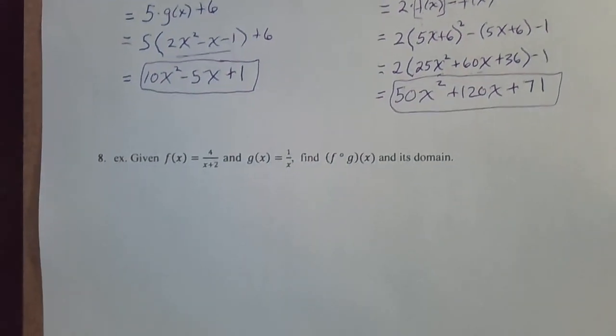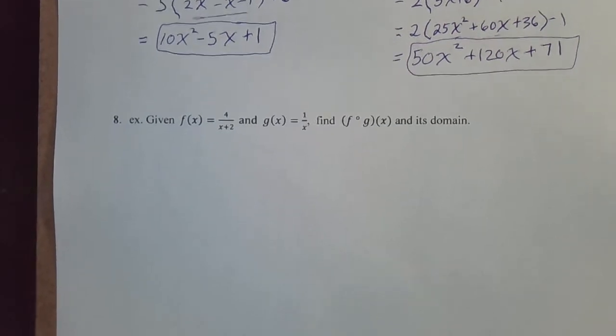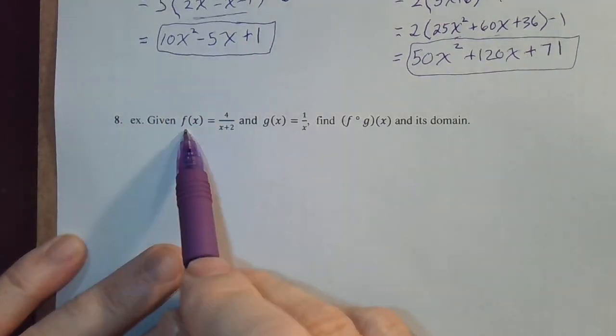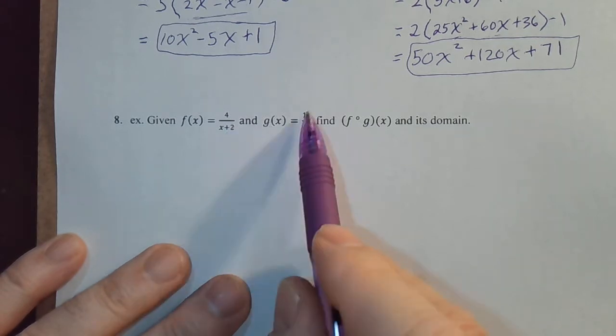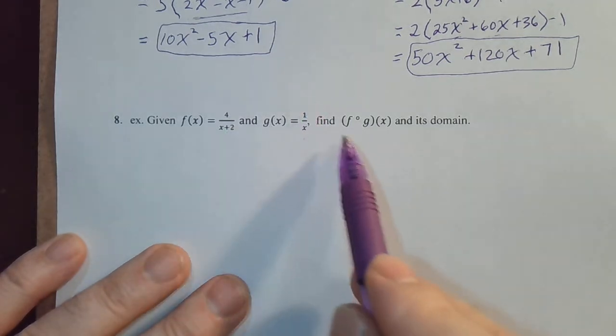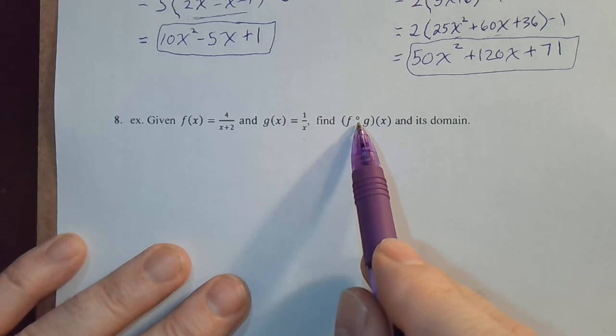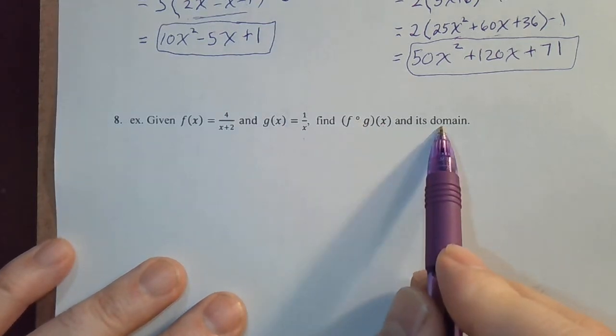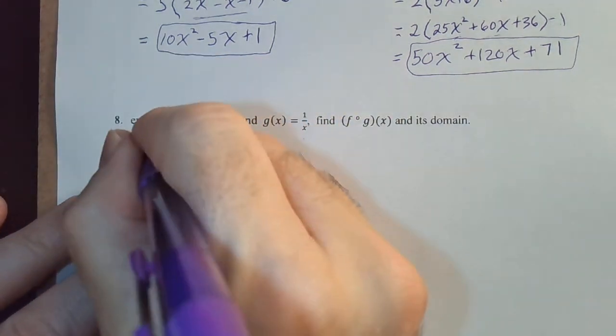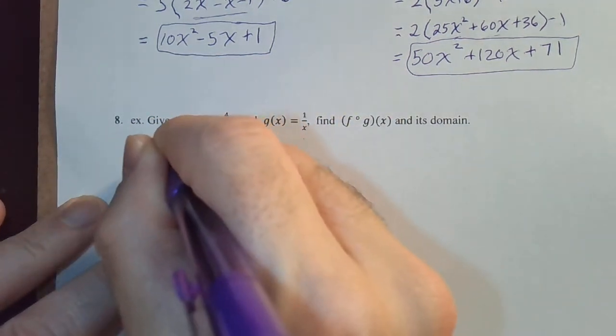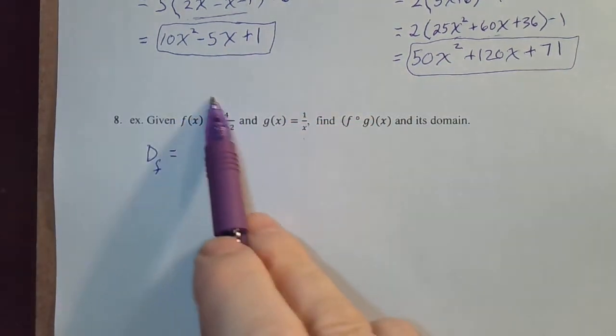I got one more problem. We've got f of x is 4 over x plus 2, g of x is 1 over x. We need to find f of g of x, f composed with g of x, and its domain. Let's go ahead, let's find out what the domain of f is.